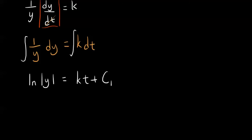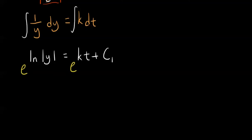Now we are going to exponentiate both sides with base e. So we have e to the natural log of absolute value of y is equal to e to the kt plus c sub 1. Since e to the natural log of something equals that something, we get absolute value of y is equal to e to the kt plus c sub 1.